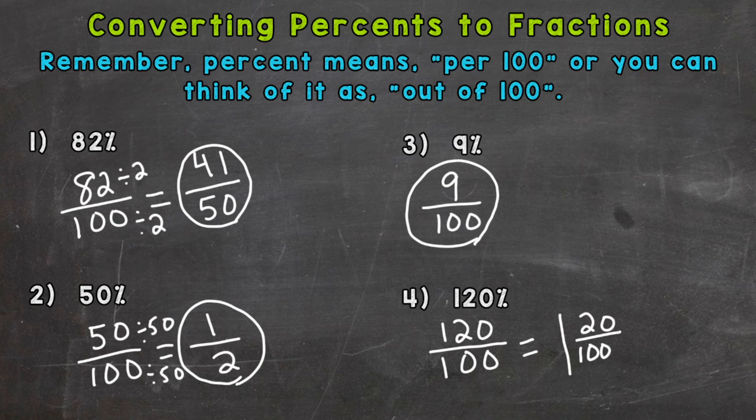And 1 and 20 hundredths can be simplified. The greatest common factor between 20 and 100 is 20. So we can divide both by 20. And we get 1 and 1 fifth.